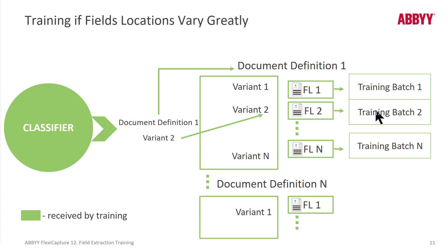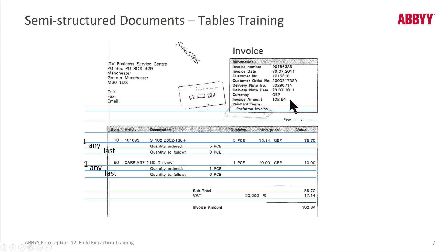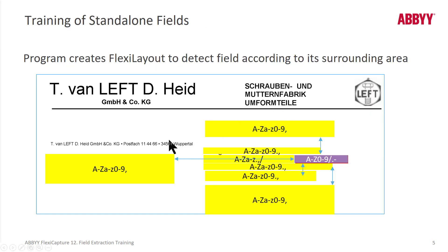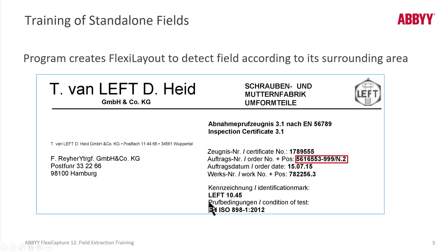If you need to make adjustments to those training batches — add content or delete content — you do that at the variant level. If you're getting unpredictable results through training, take a close look at the documents you're trying to train. If you notice quite a bit of differences — for instance, anchor text strings varying significantly — you may want to create a document definition variant within a section, classify that variant differently, and then there will be a resulting training batch for that variant.